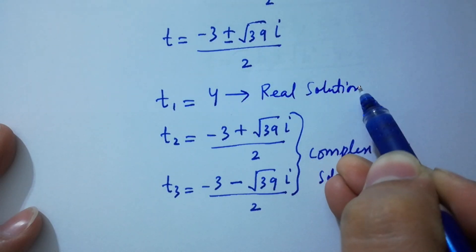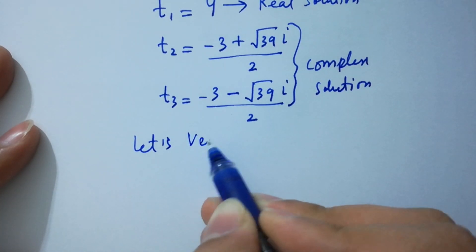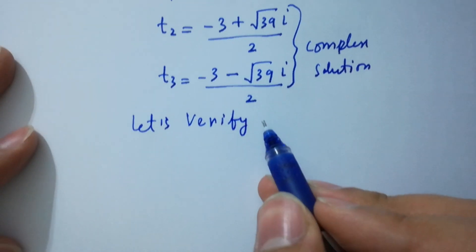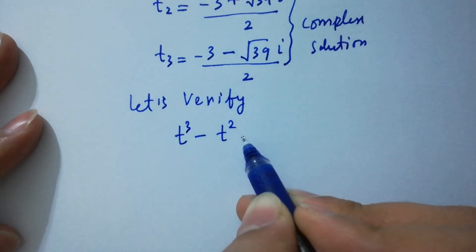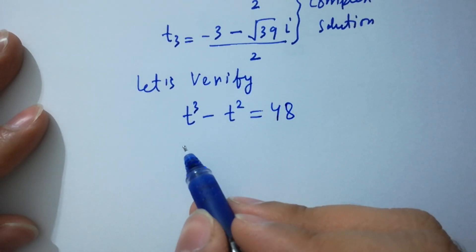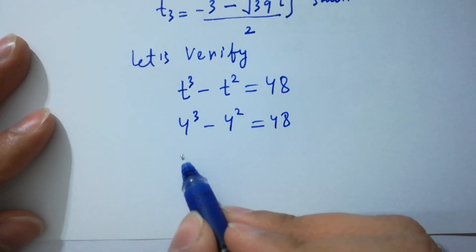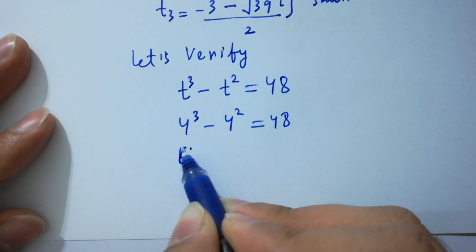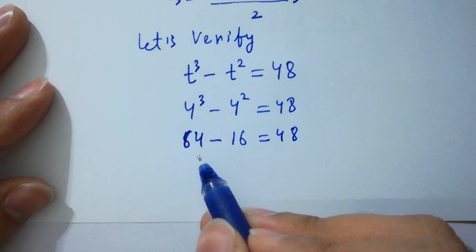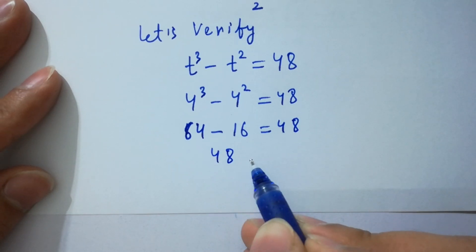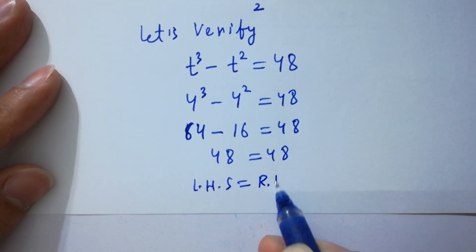Now let's verify. t cubed minus t squared equals 48 for t equals 4: 4 cubed minus 4 squared equals 64 minus 16, which equals 48. Left hand side equals right hand side. Verified.